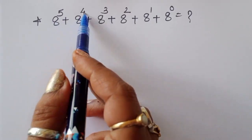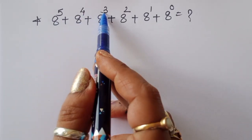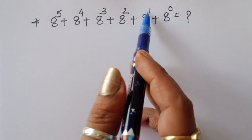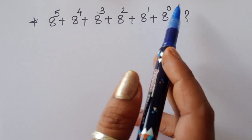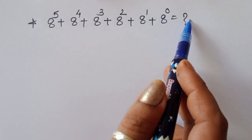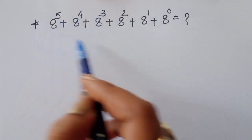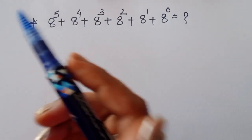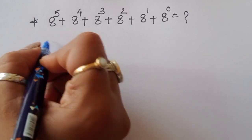8 power 5 plus 8 power 4 plus 8 power 3 plus 8 power 2 plus 8 power 1 plus 8 power 0 is equal to what? We have to find out the value of this term. Let's see the solution.